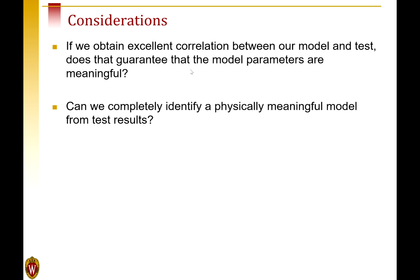A couple of questions for you to think about now. Suppose we get perfect correlation between our model and test. Does that guarantee that all of the parameters that we use to get that correlation are perfect? Another question we might ask is, if we just had test results, could we completely identify a physical model? The answer to those questions is no on both cases, and I'll use this simple example to illustrate it.